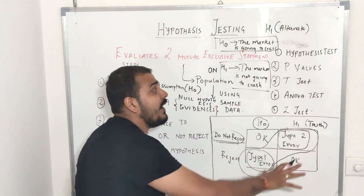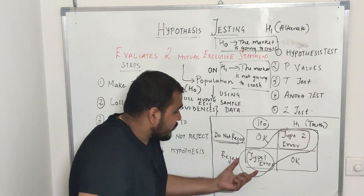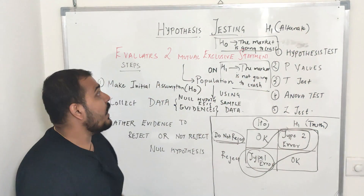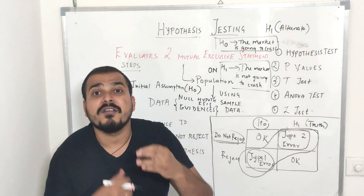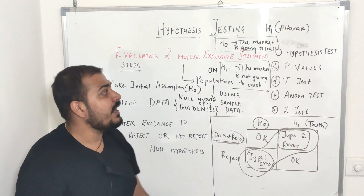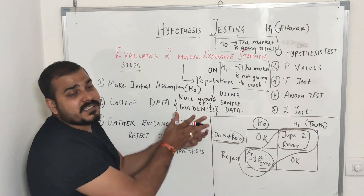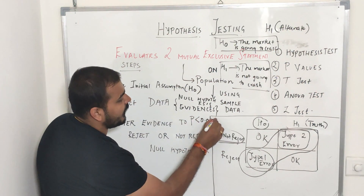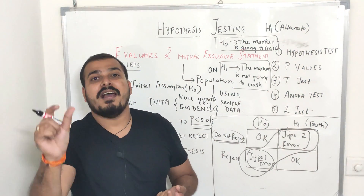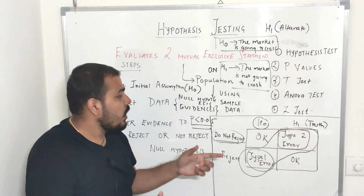You should understand this with respect to the confusion matrix considering the real world problem statement. This is what hypothesis testing is all about. It depends whether type 1 error can be more harmful or type 2 error can be more harmful, based on the problem statement that you are solving. In my next video, I will be showing you how to perform hypothesis testing — solving a simple math problem statement so that you'll understand how to solve it with the help of p-values. Whenever I say I am not able to prove the null hypothesis, we basically consider a p-value less than 0.05. If the p-value is less than 0.05, we reject the null hypothesis and go with the alternate hypothesis. This 0.05 is called a significance value.